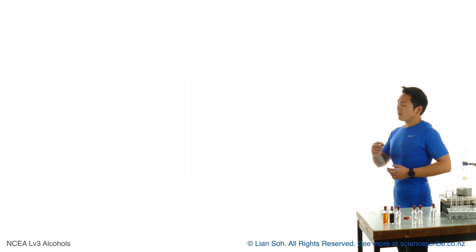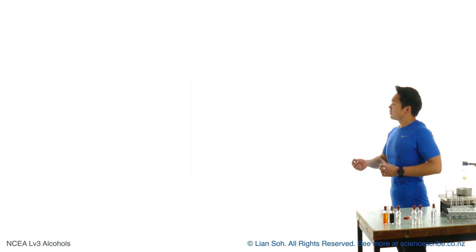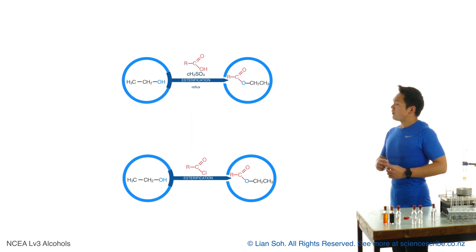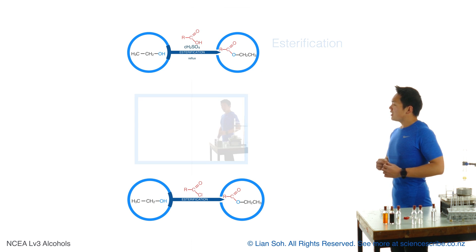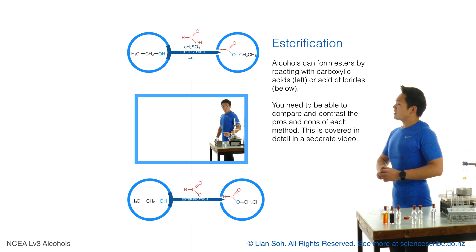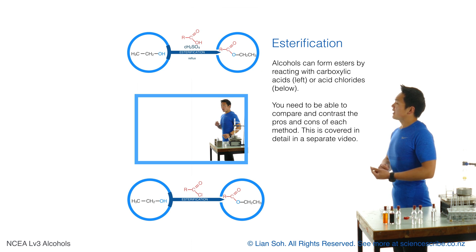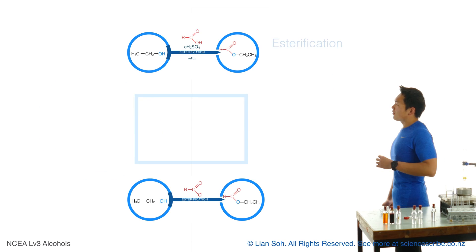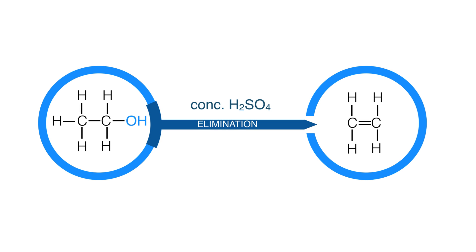New to you this year is the fact that alcohols can form a new functional group called an ester. Esters are new for NCEA Level 3 and there are two ways to make them: you can use an alcohol and a carboxylic acid, or you can use an alcohol and an acid chloride. From NCEA Level 2 you also saw that alcohols could undergo dehydration reactions with concentrated sulfuric acid.